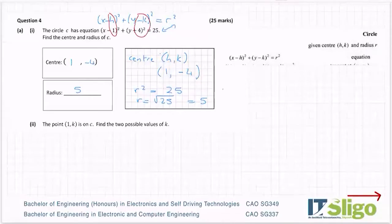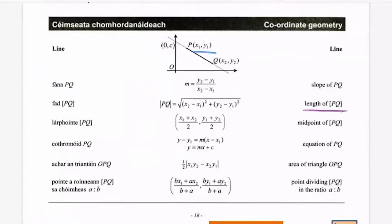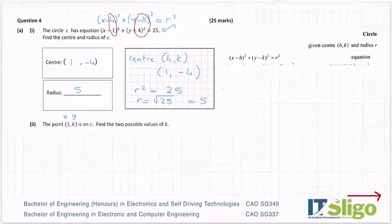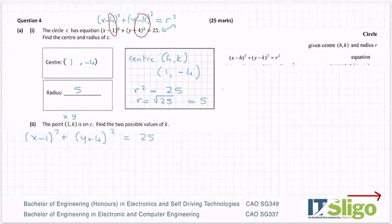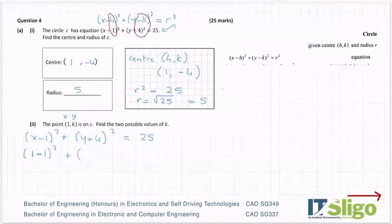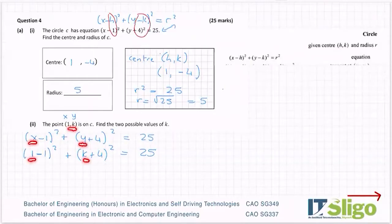The next part: the point (1, k) is on C. You could also get a question like this where the point is on a line — same method, just a different equation. I've labeled the point x, y. I'm going to substitute it into the equation of the circle: (x minus 1) squared plus (y plus 4) squared equals 25. Subbing in x equals 1 and y equals k: (1 minus 1) squared plus (k plus 4) squared equals 25.